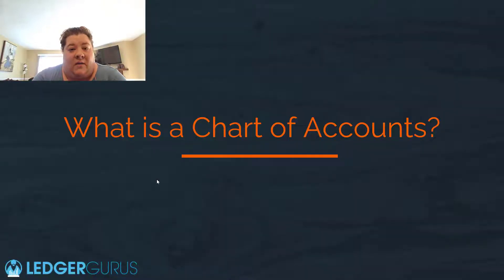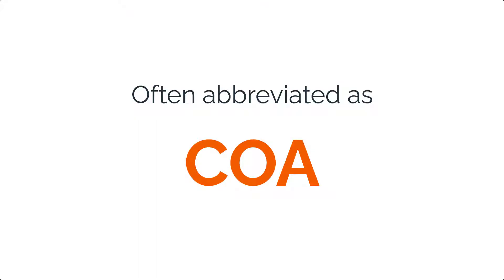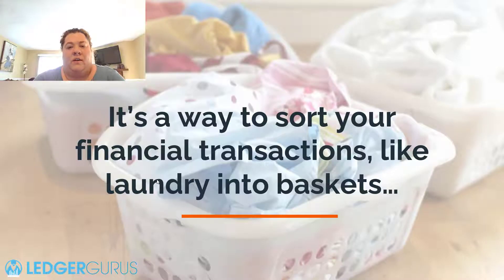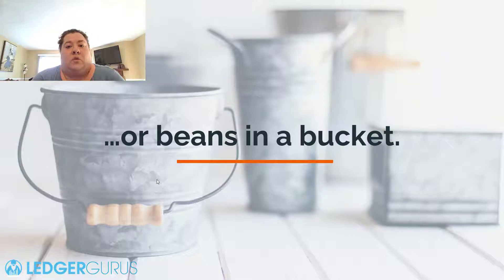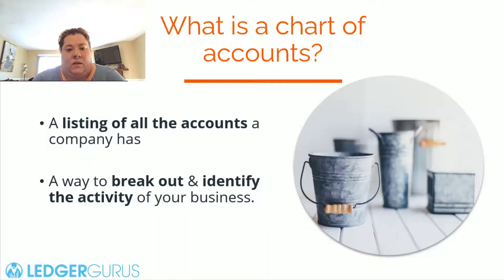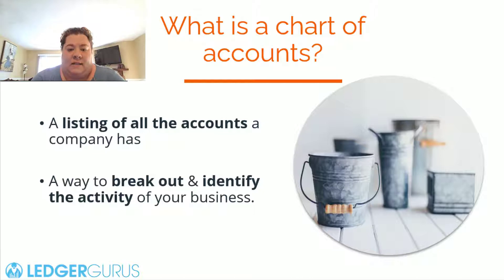So first of all, what is a chart of accounts — you'll also see this abbreviated as COA. It's a way for you to take all the financial transactions of your business and sort them out, like laundry into baskets or like beans into different buckets. We're bean counters, so you take beans and divide them all out into different buckets. A chart of accounts is basically a list of all the different types of major categories that a business has, and it's a way to take all of this activity, identify it, and break it out into these different buckets.